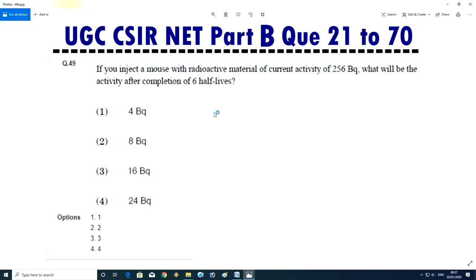Question No.50 - If you inject a mouse with radioactive material of current activity of 256 Bq, what will be the activity after the completion of 6 half-lives? Answer will be A, 4 Bq.